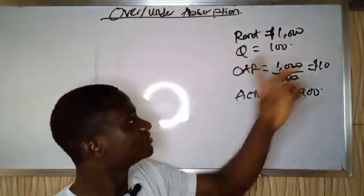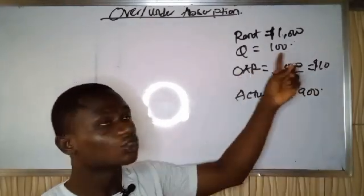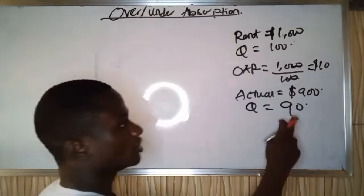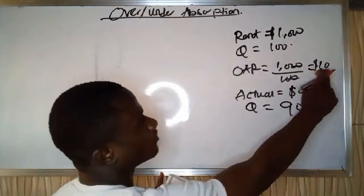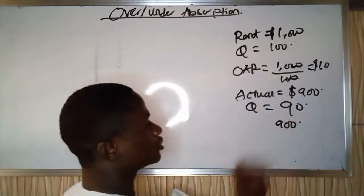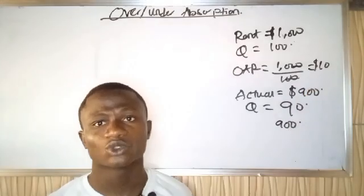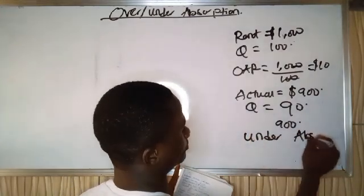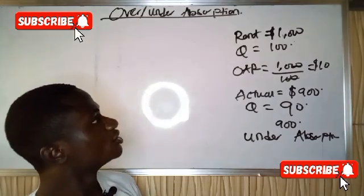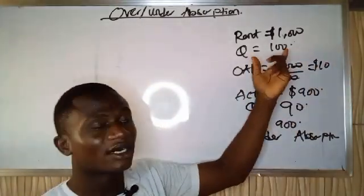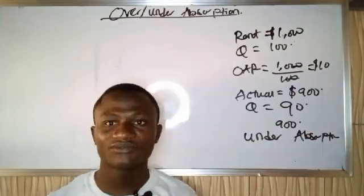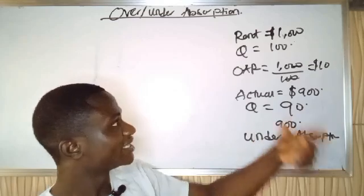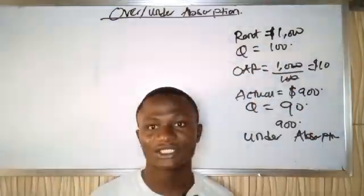One case is if I do not produce up to the budgeted 100 units. According to my calculations, to cover my rent I have to charge $10 on 100 units, but I end up producing only 90 units. So 90 units times the overhead absorption rate of $10 gives me $900, which does not cover my rent of $1,000. This is what we call under absorption — when the estimated overhead is not fully covered.